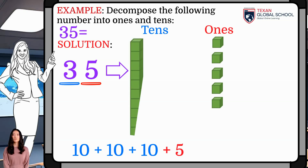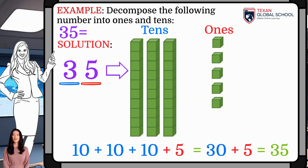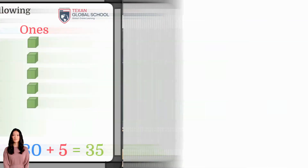We can model using 5 cubes, or 5 1s, and 3 bars of 10 1s as 10s. In this way, we can see that adding them results 35.